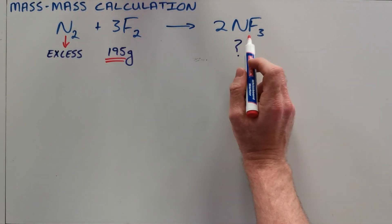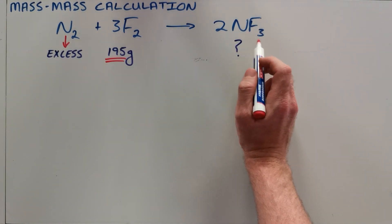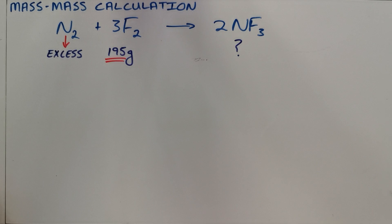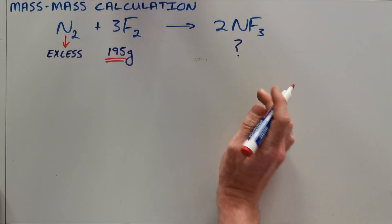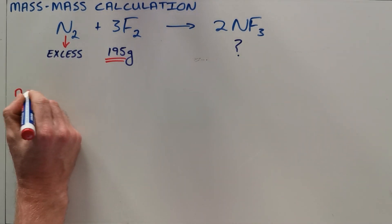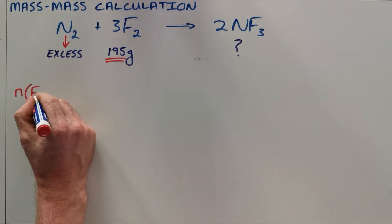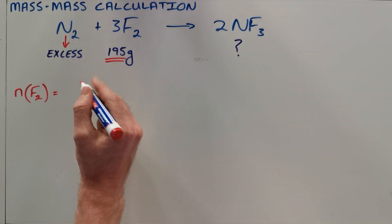of the product would be formed. The way that we do that is we know we cannot compare masses of different substances, so our first step is always going to be to calculate the number of moles of the substance that has been given.